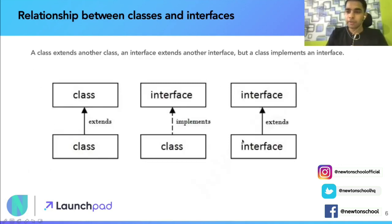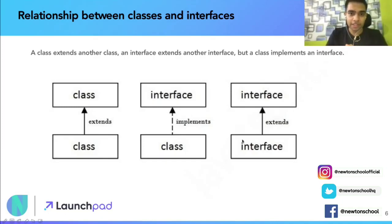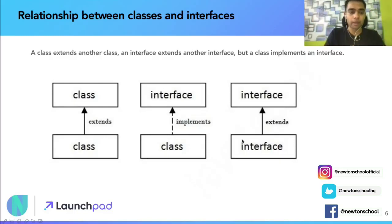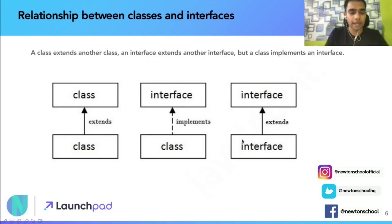What is the relationship between classes and interfaces? A class can extend another class. An interface can extend another interface. But a class implements an interface — that's the key difference. As seen in the diagram: one class extends another class, one interface extends another interface, but a class implements an interface.